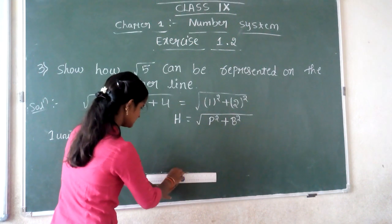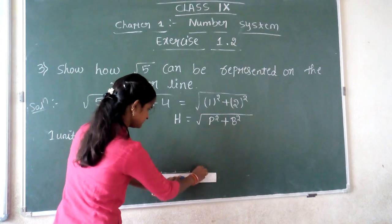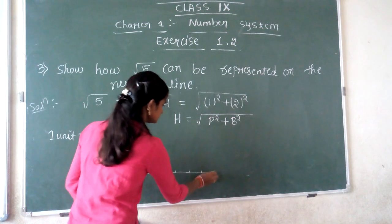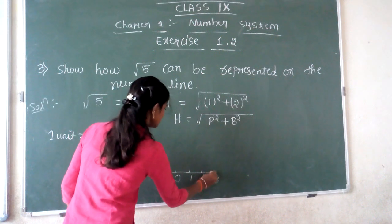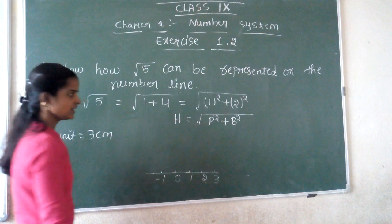Mark out the number line. Here: 0, 1, 2, 3, and here, -1.